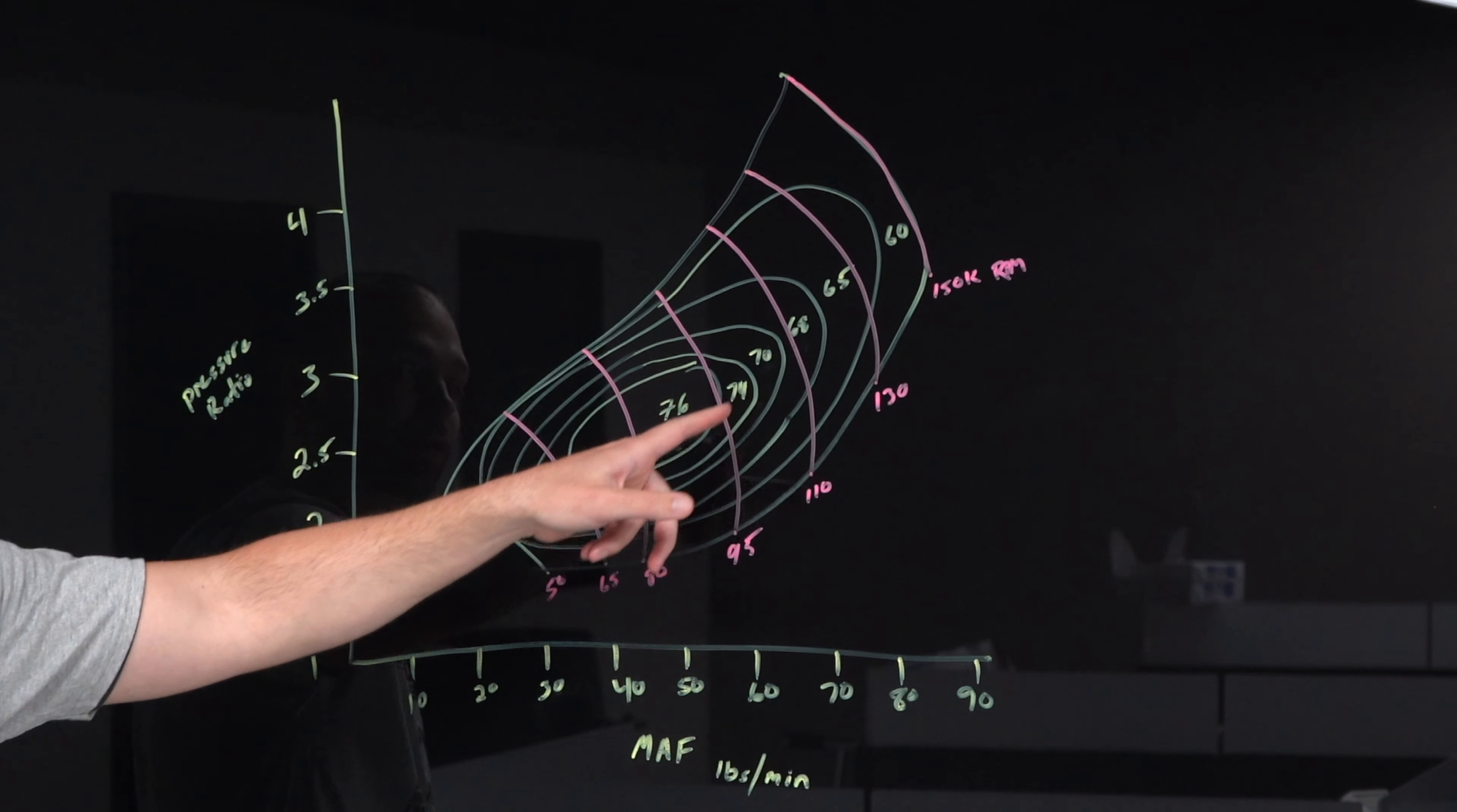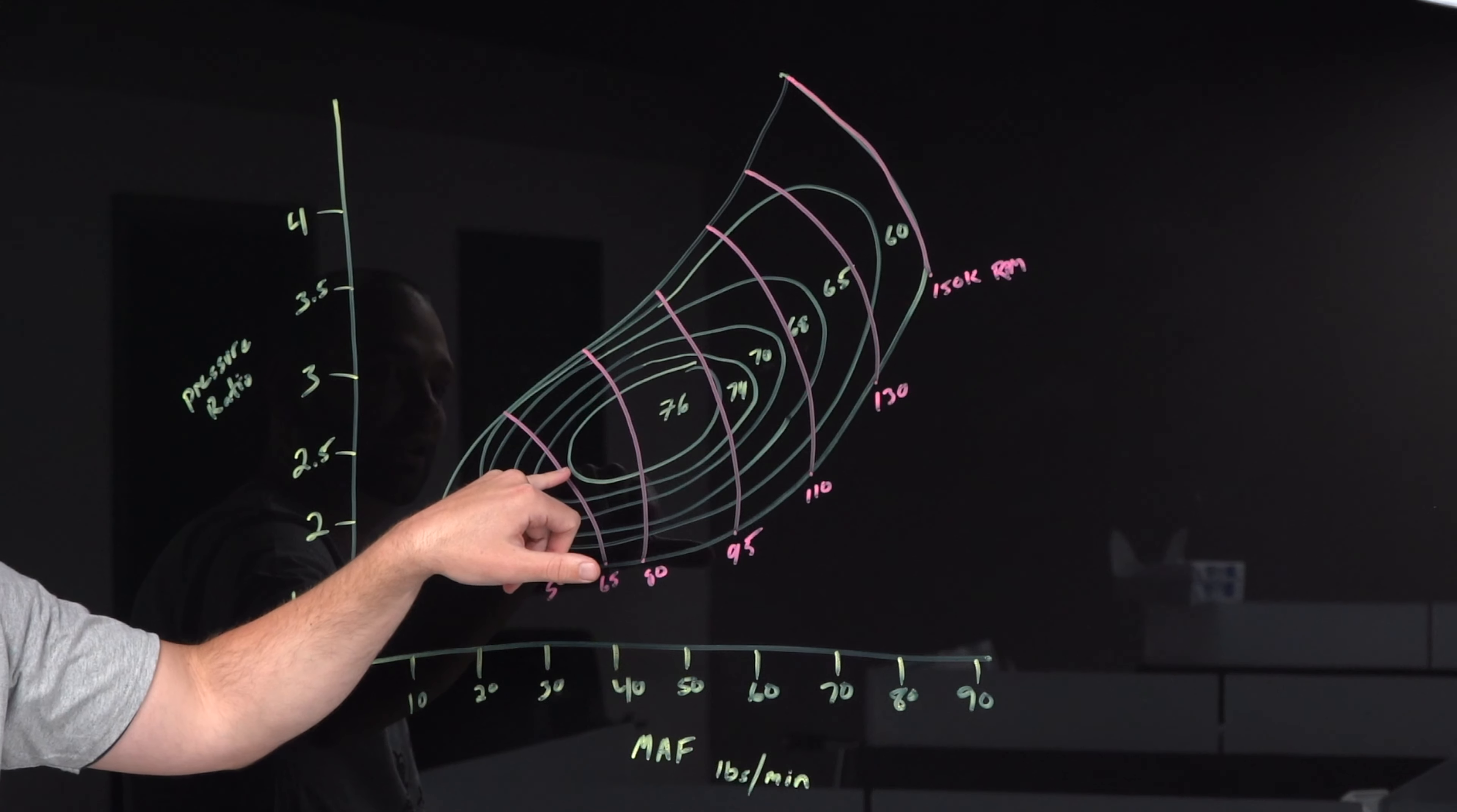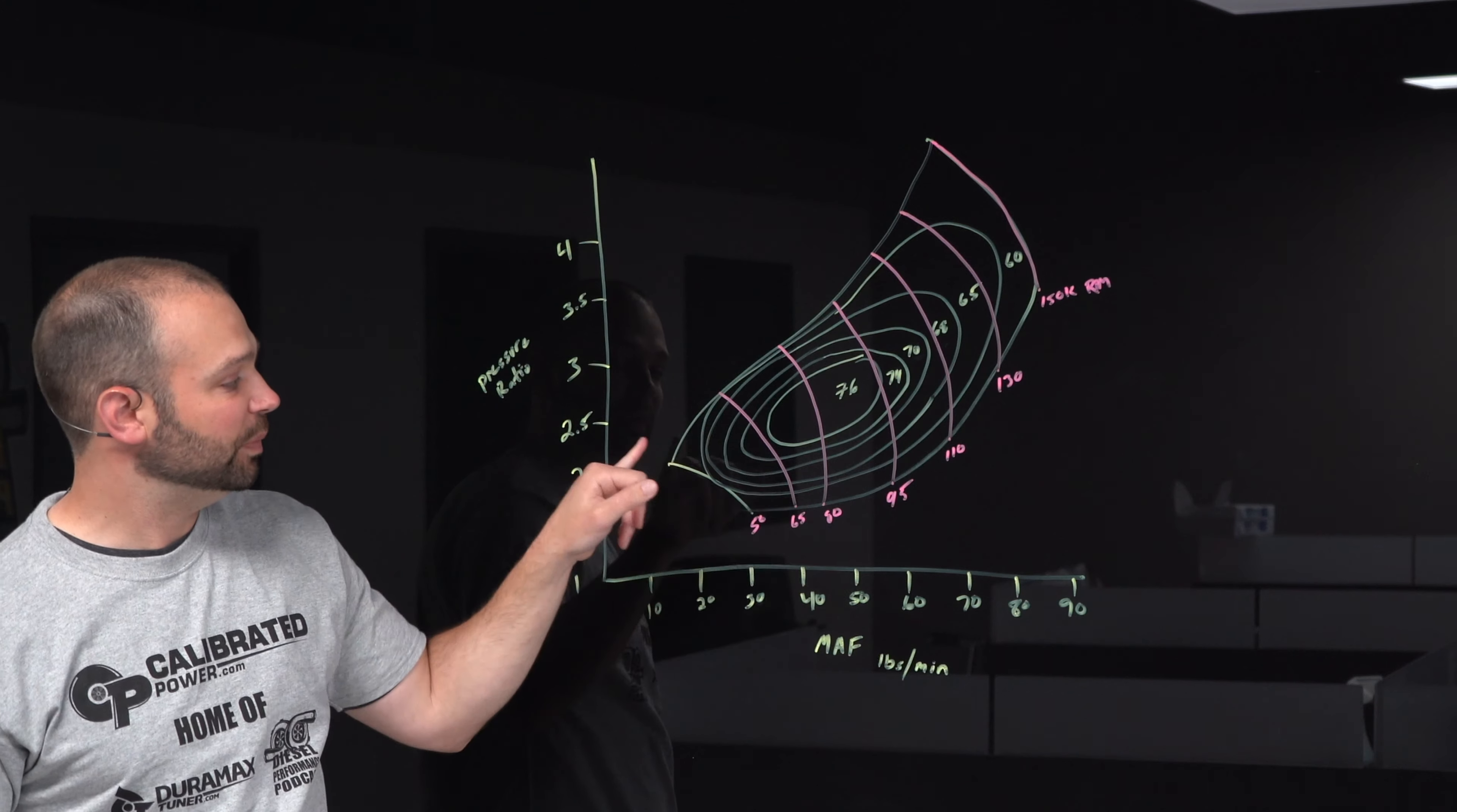So as you turn the compressor shaft slower, 95,000 RPM, 80,000 RPM, you can see the compressor is really happy operating between 80,000, we'll call it 70,000 RPM and 95,000 RPM. As we operate past 95,000 RPM, we start to come off that efficiency island.